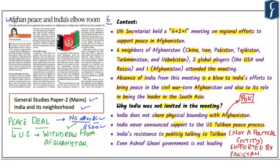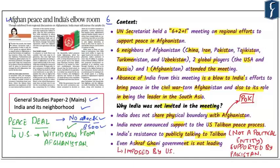Even the Ashraf Ghani government is not leading this peace negotiation process. India has invested in the democratic government of Ashraf Ghani — supporting police, law and order, health facilities, infrastructure, roads, and many other aspects. However, the Ashraf Ghani government is not actively participating in the peace deal with the Taliban, because this peace deal is actually imposed by the US on the people of Afghanistan.